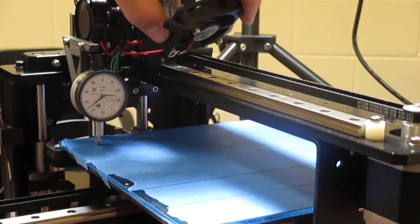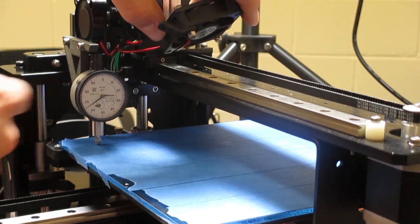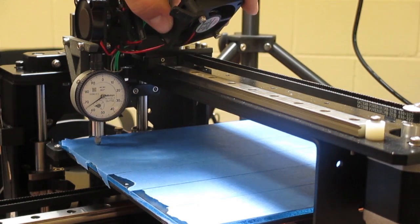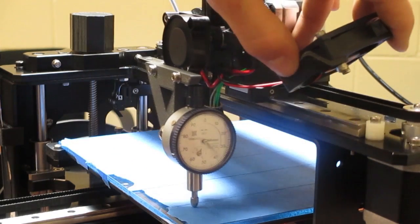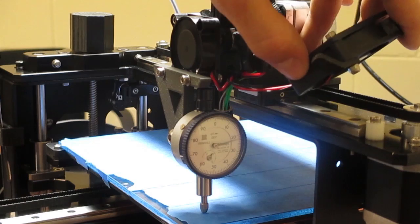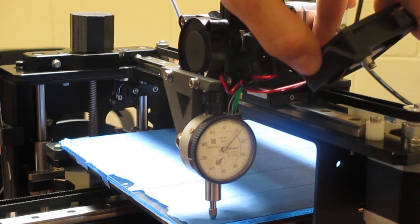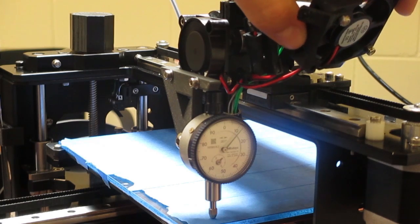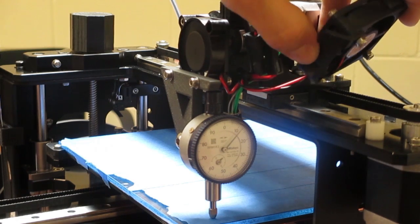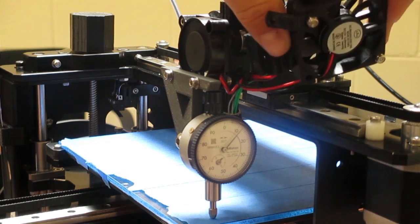As you can see, we are at about 65 thousandths of an inch at this place. You're going to come to the other side. And see, as you saw, the dial indicator unraveled two and a half times. Therefore, the front corner is higher than this front right corner.